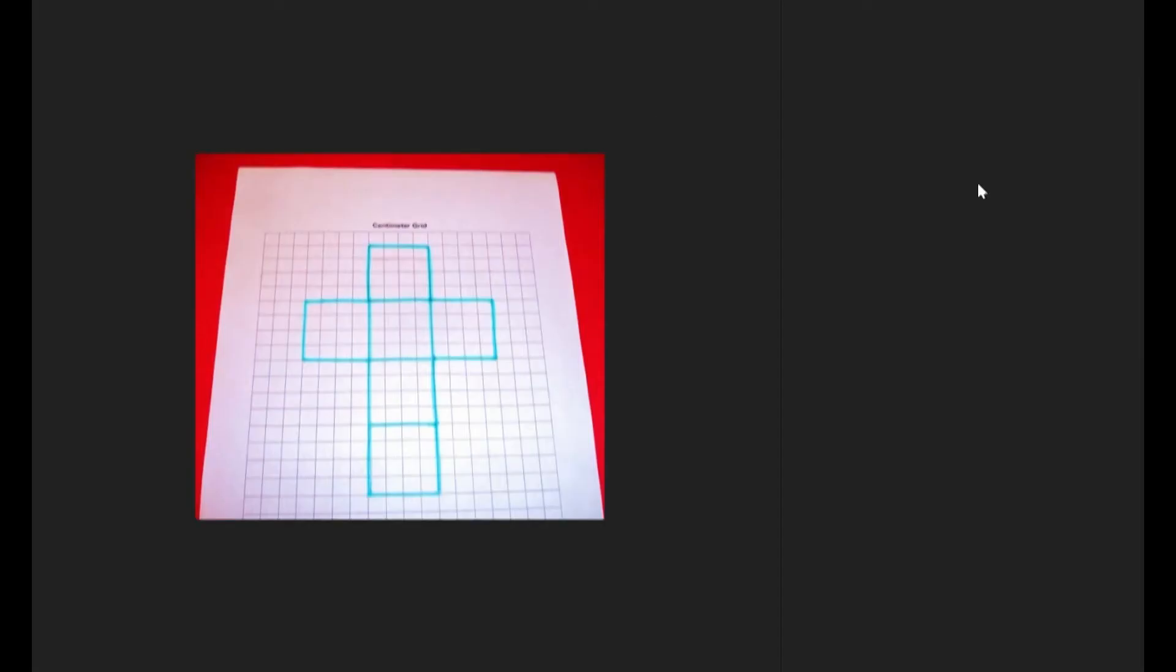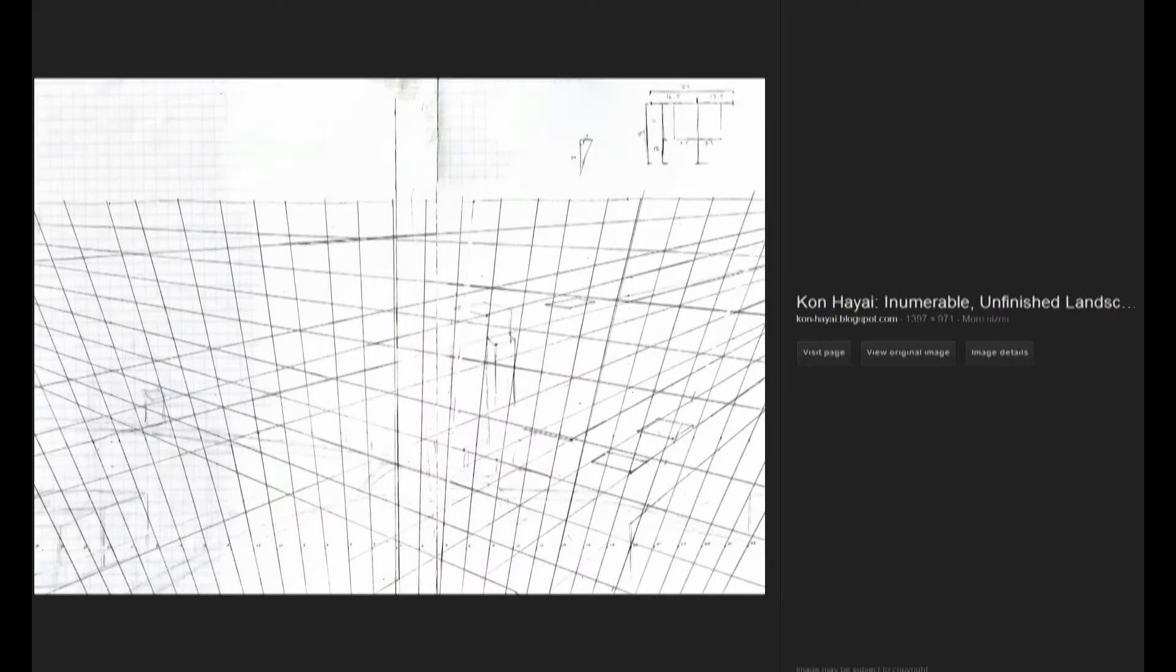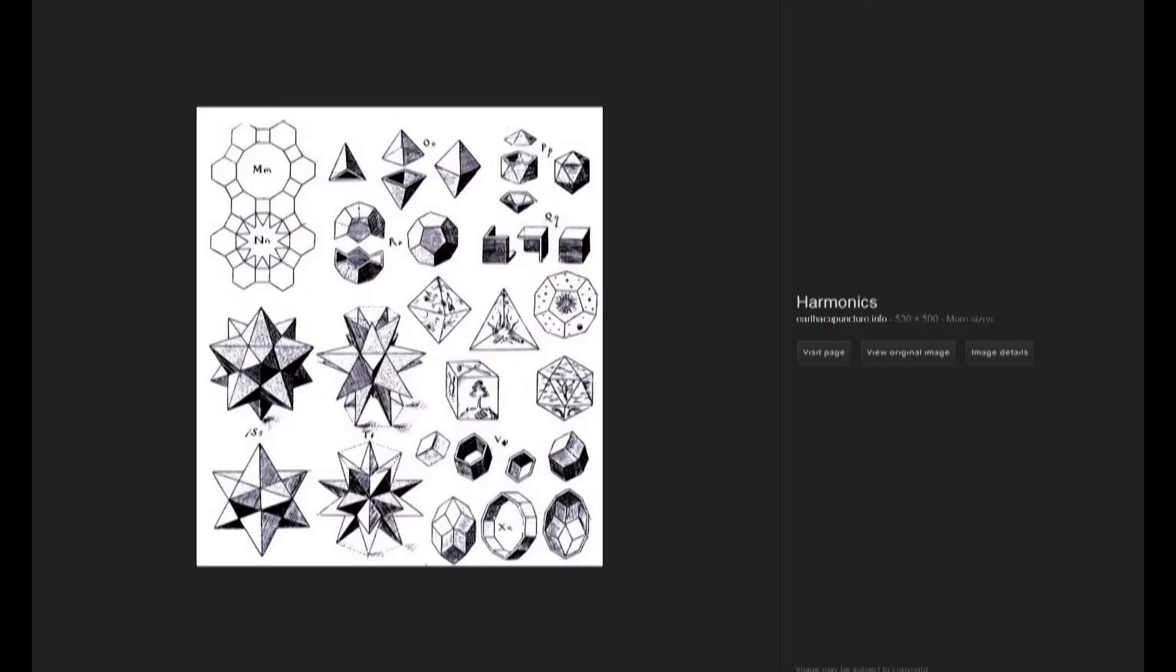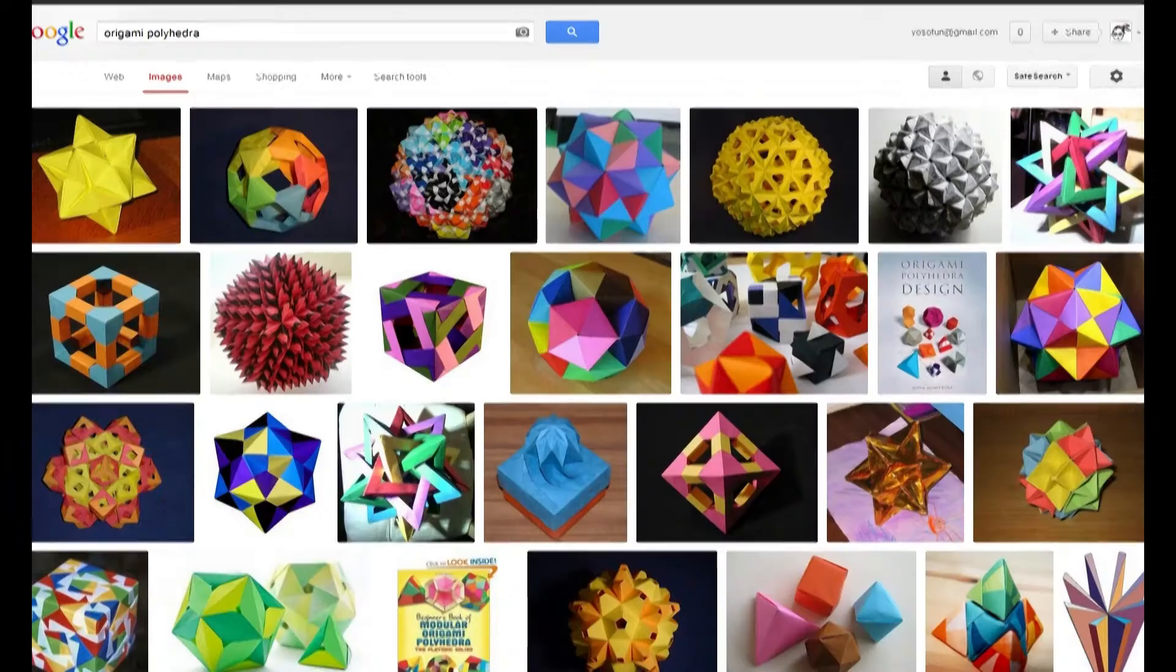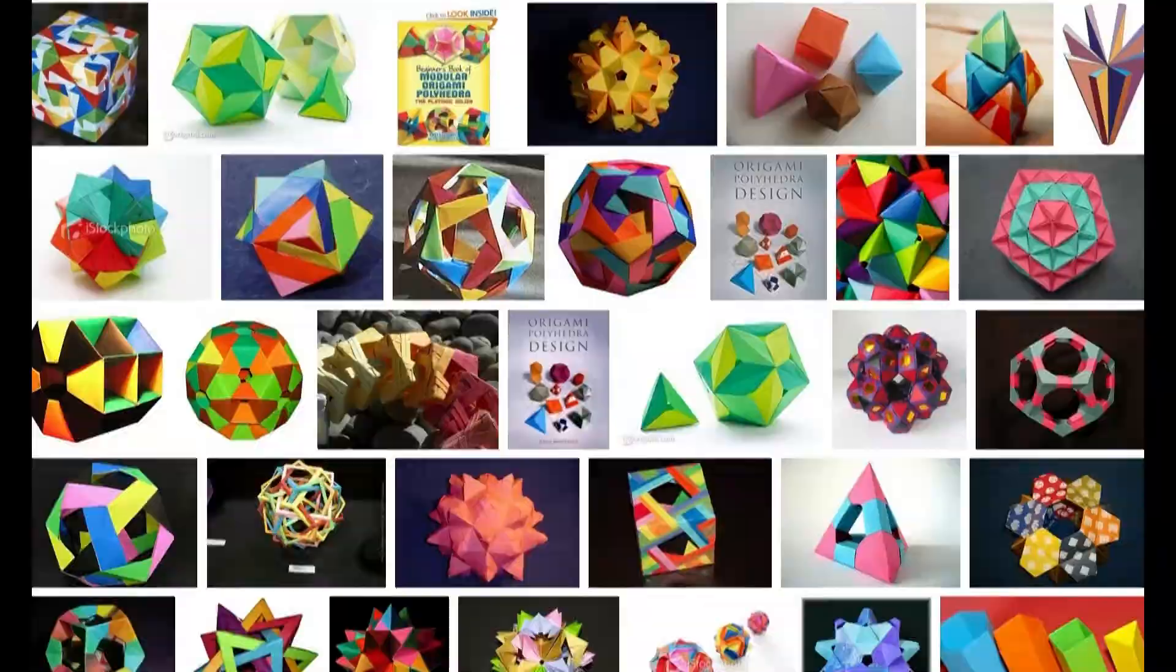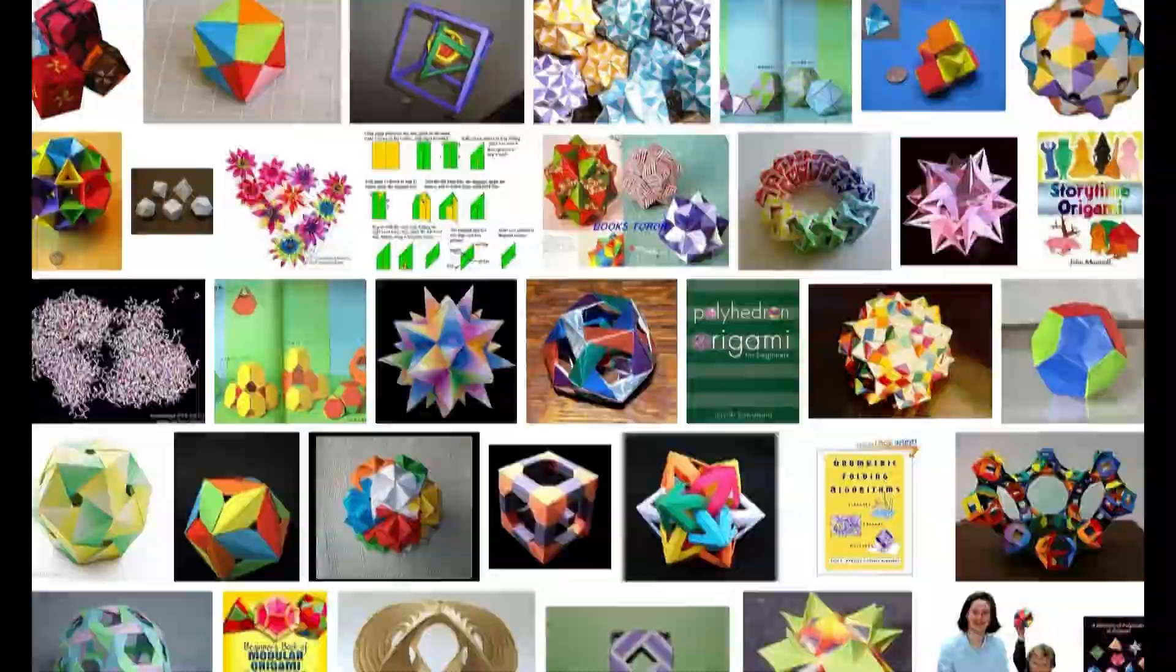Traditionally, students learn about these objects by sketching them on 2D graph paper. They don't get a visceral, immersive 3D version unless they kill a lot of trees and make origami.